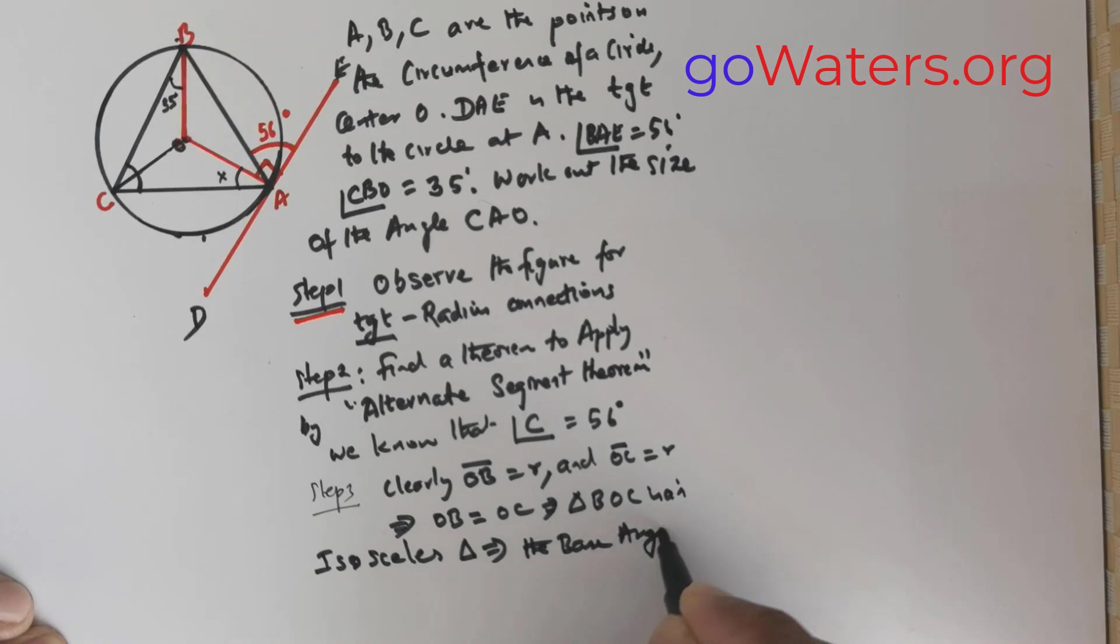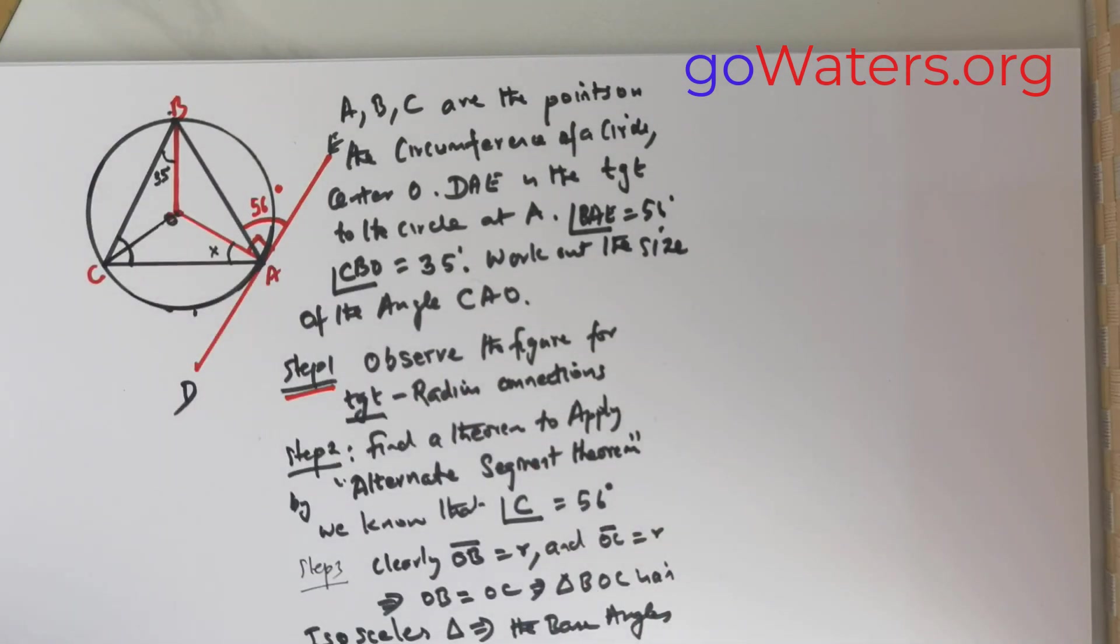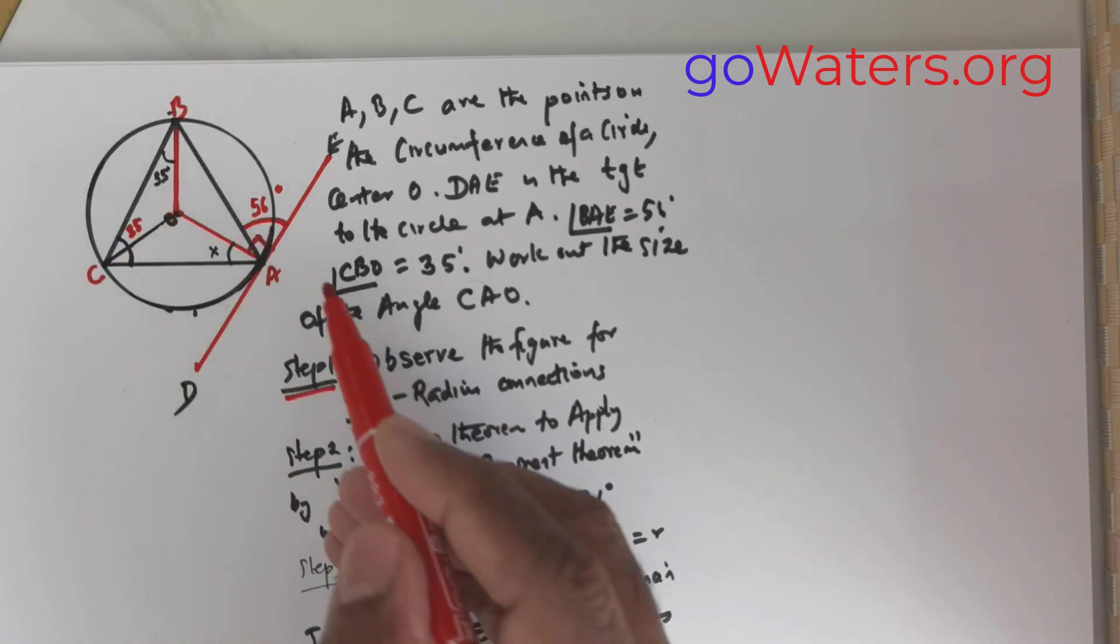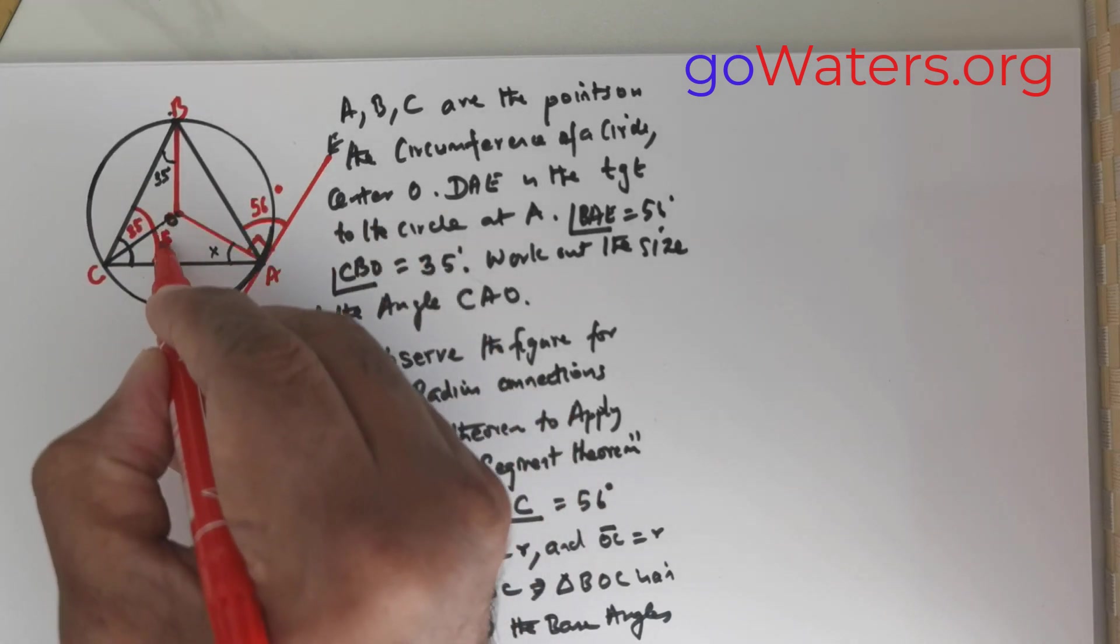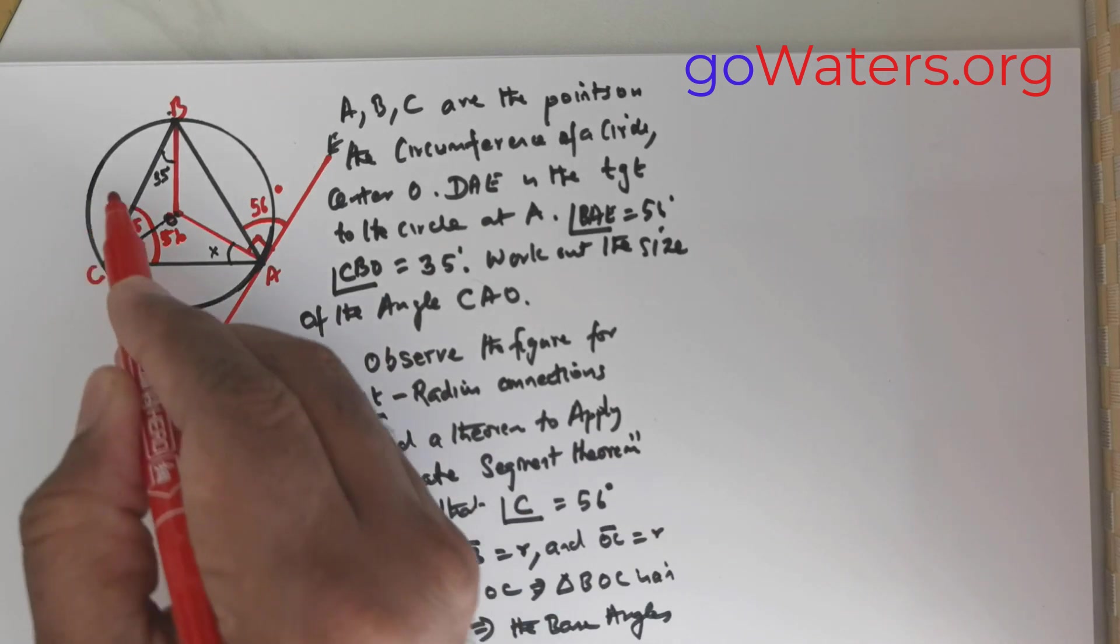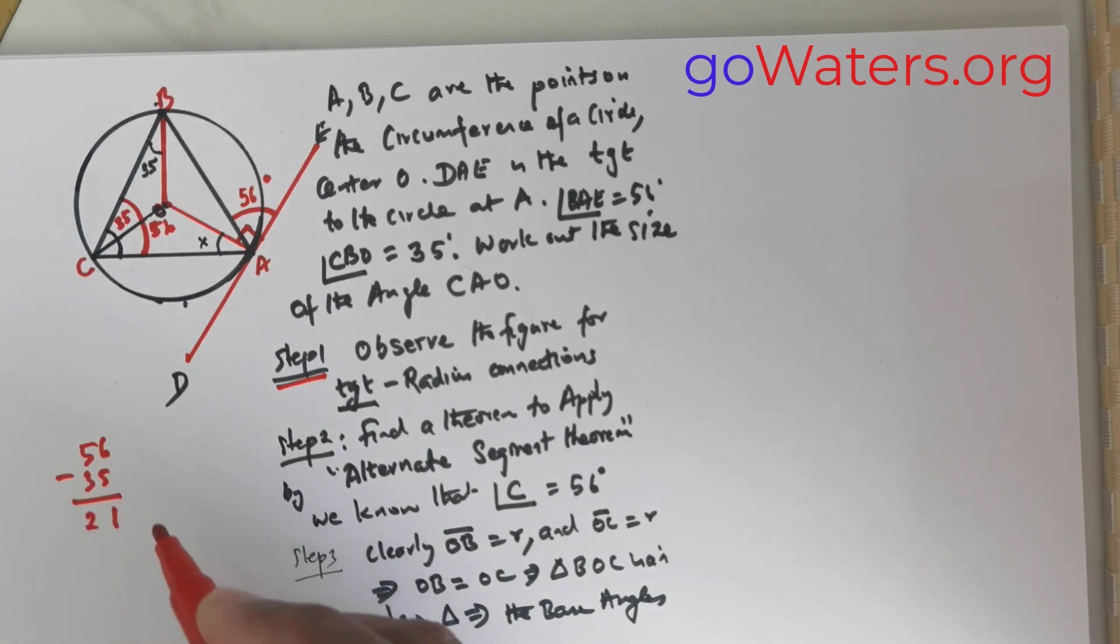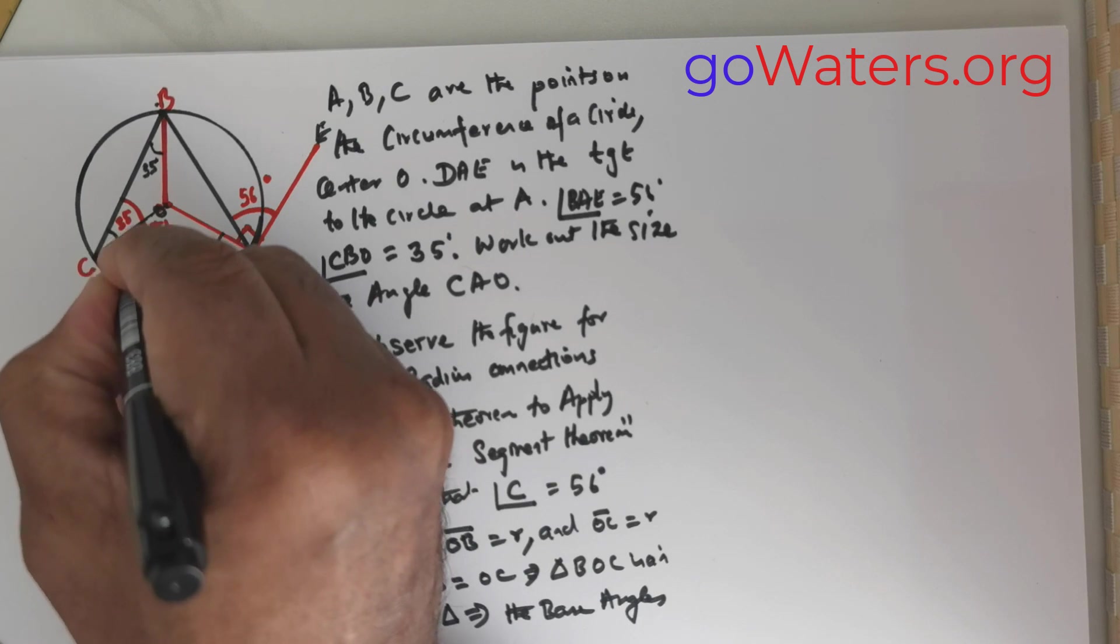This means the base angles are equal. So what is the base angle here? The base angle is 35. So clearly I can state that this is 35. But by alternate segment theorem I know this entire angle. This entire angle is 56. Now the question is if this entire angle is 56 what is this? 56 minus 35, you get 21. So you can write 21 over here. So this is 21.